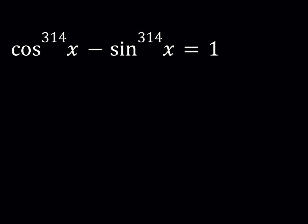All right, so we do have cosine x to the power 314 minus sine x to the power 314 and the difference is equal to 1. We're going to be looking for x values in radians. This time we're going to be finding it for radians and this is a pi day special. So let's get started.